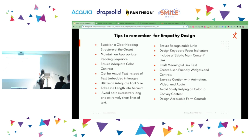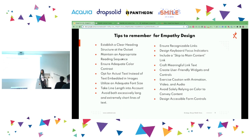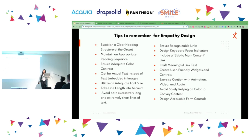Maintain adequate color contrast — as discussed, use those color tools throughout the design. Next: opt for actual text instead of text embedded in images. We might have a very colorful image and want to give information through it — but it doesn't work for accessibility. Ensure there is alt text or that informative text is kept separately, not embedded in an image.